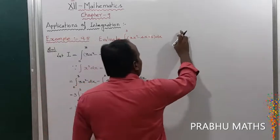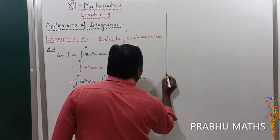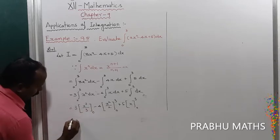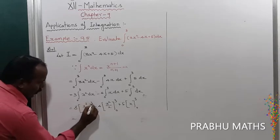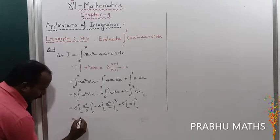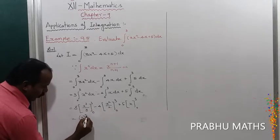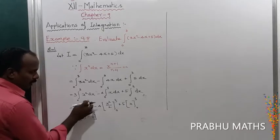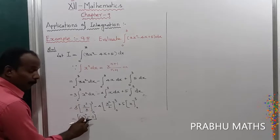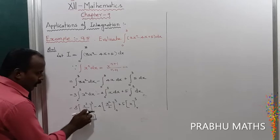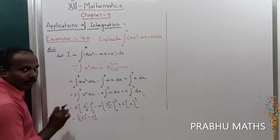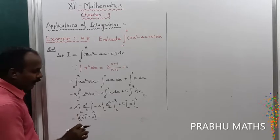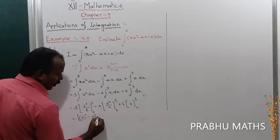Next, first apply the upper limit, then apply the lower limit. By using the second fundamental theorem: the integral from a to b of f(x) dx equals f(b) minus f(a). Upper limit minus lower limit — that is the important step.